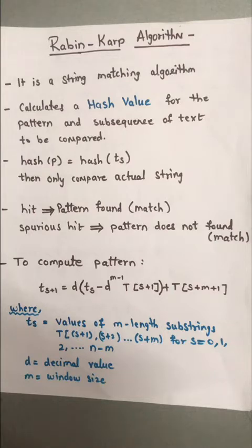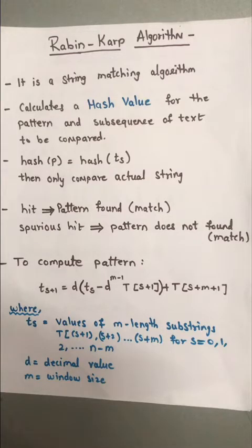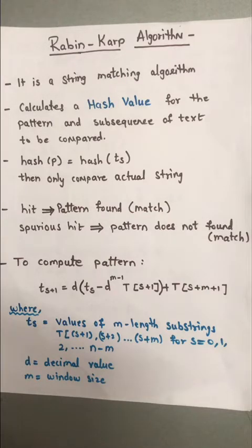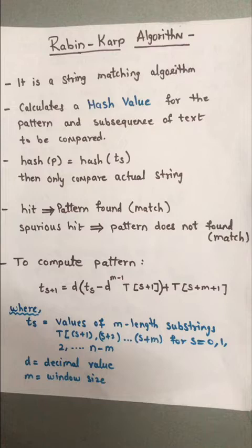In the Rabin-Karp Algorithm, we calculate the hash value for the pattern and for each subsequence of the text to be compared. If the hash value of the pattern equals the hash value of the text subsequence, then only we compare the actual strings. If hash values do not match, the algorithm continues to the next subsequence. If the pattern is found, that is called a valid hit; if the hash matches but the pattern does not, it is called a spurious hit. There is only one comparison per text subsequence, and character matching is only needed when hash values match.